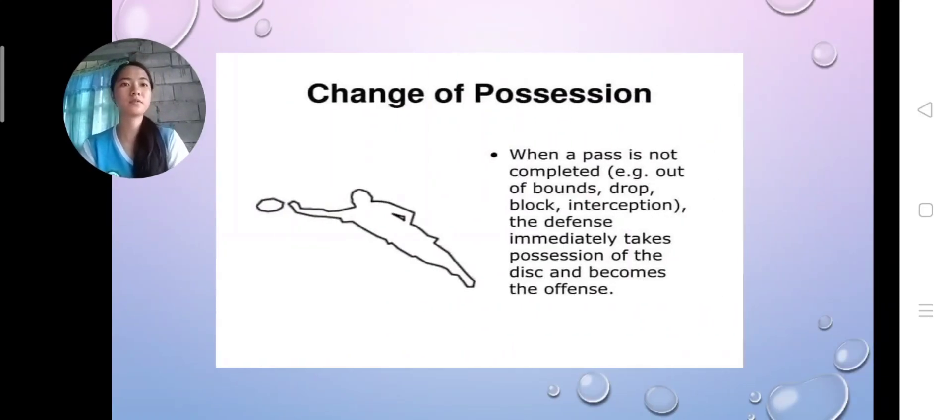Change of possession. When a pass is not completed—for example, out of bounds, drop, block, or interception—the defense immediately takes possession of the disc and becomes the offense.